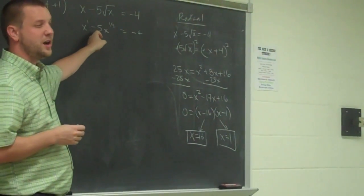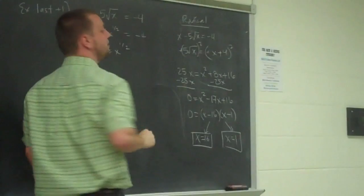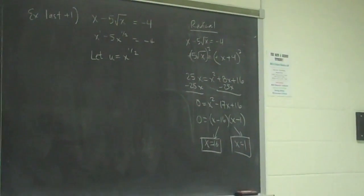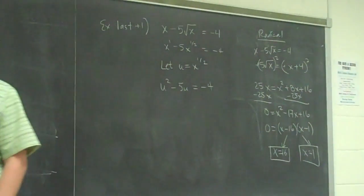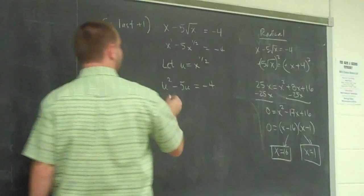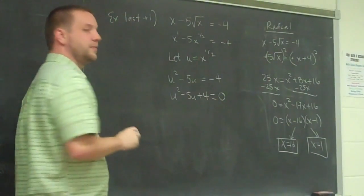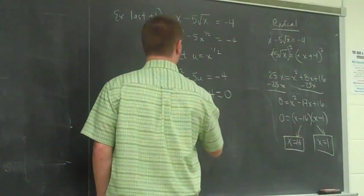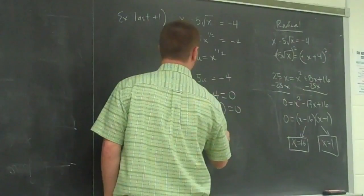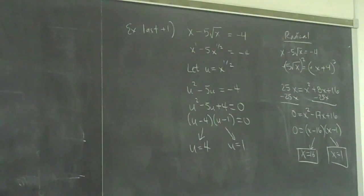If I'm working this as a quadratic in the form kind of problem, then I would say u equals this x to the 1 half. That's a quadratic equation in terms of u. If I add that 4 over, that becomes an equation that's really easy to solve. Really easy to factor. u minus 4 times u minus 1. From which we get u equals either 4 or u equals 1. But that's u, not x. Right?